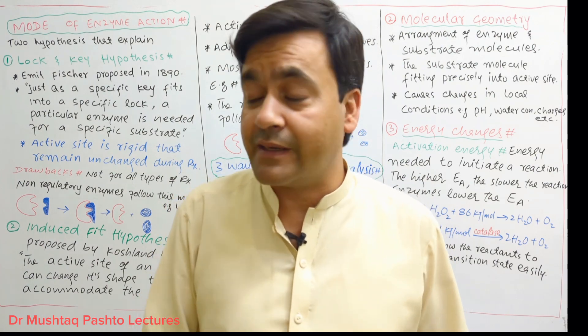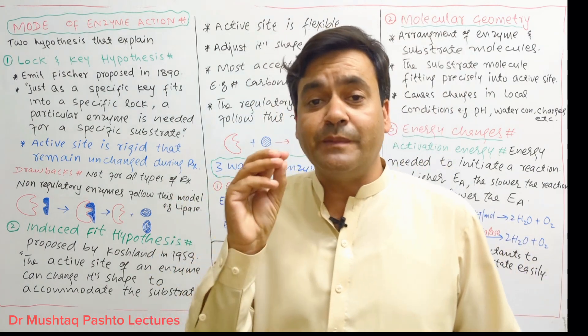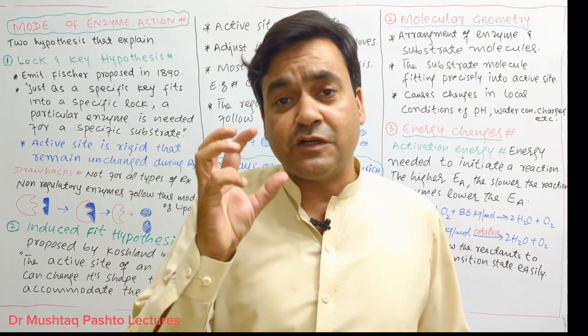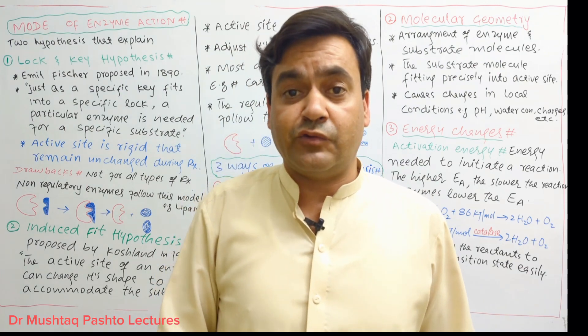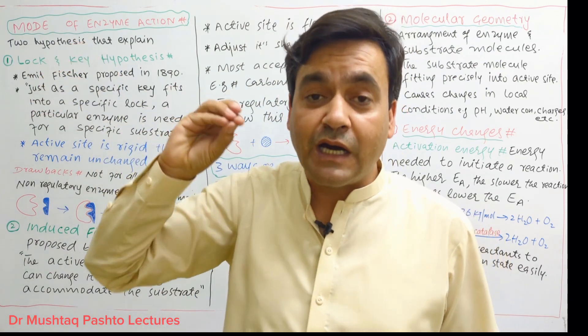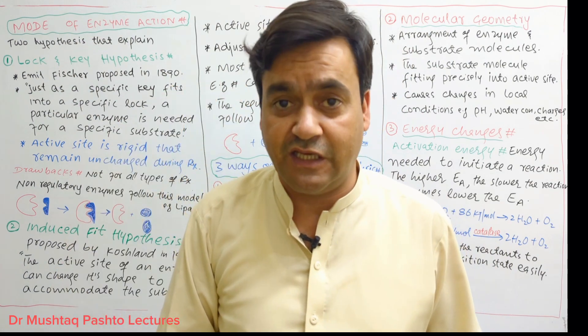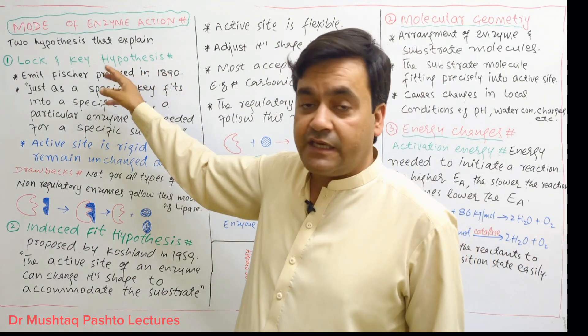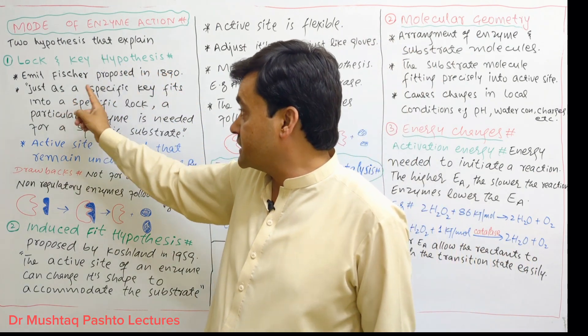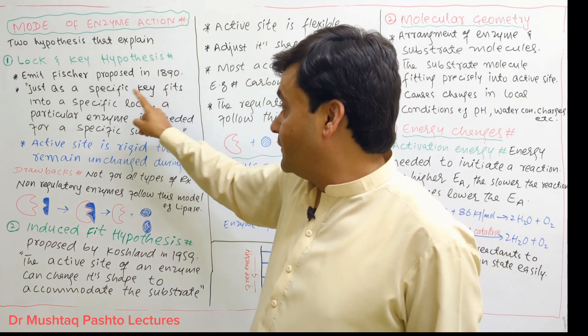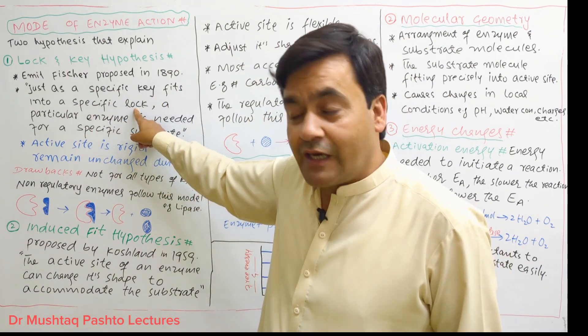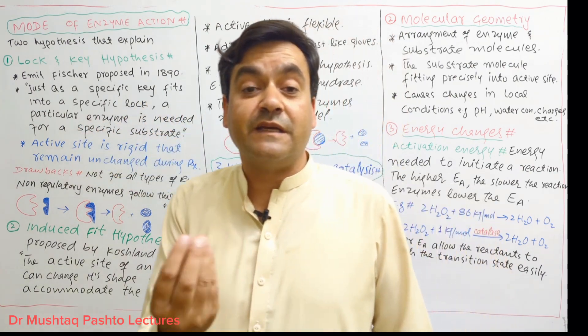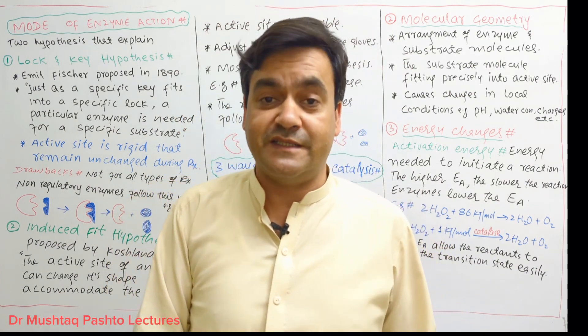Lock and key hypothesis is named because of the lock and key concept. Just as a specific key fits into a specific lock, this hypothesis states that for a specific substrate, a specific enzyme is required. Emil Fischer proposed this in 1890. Just as a specific key fits into a specific lock, a particular enzyme is needed for a specific substrate.